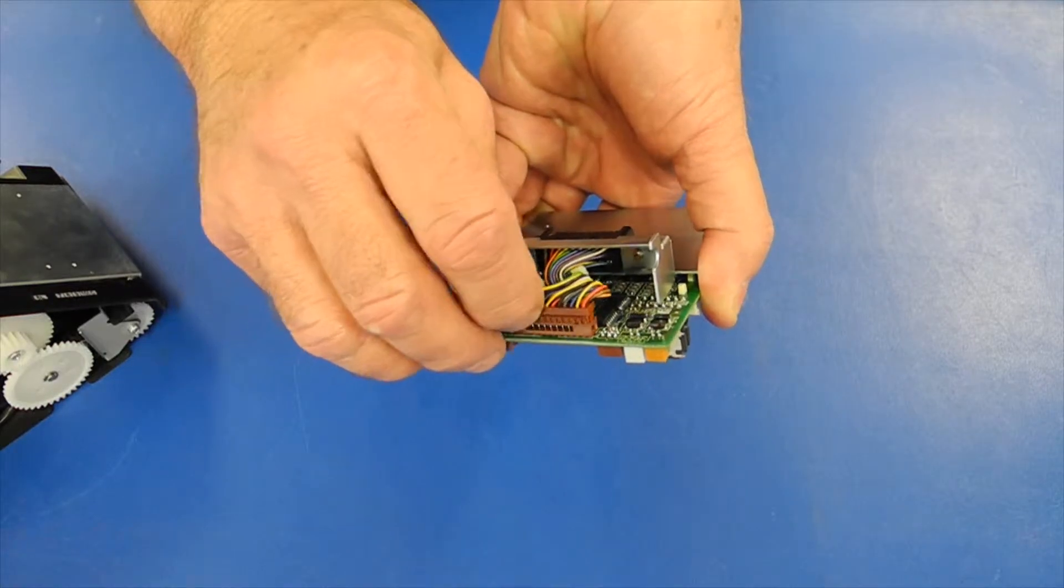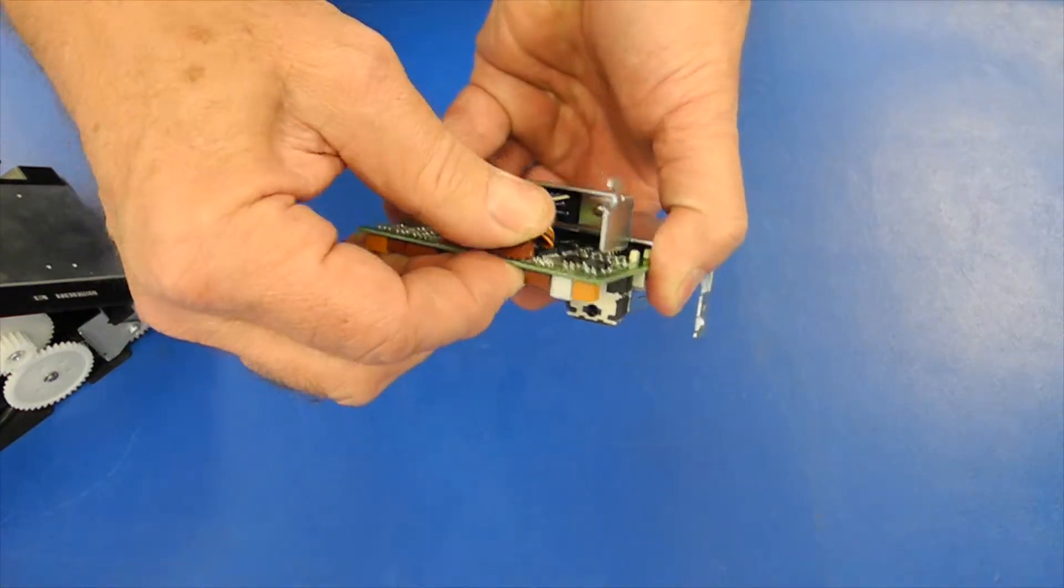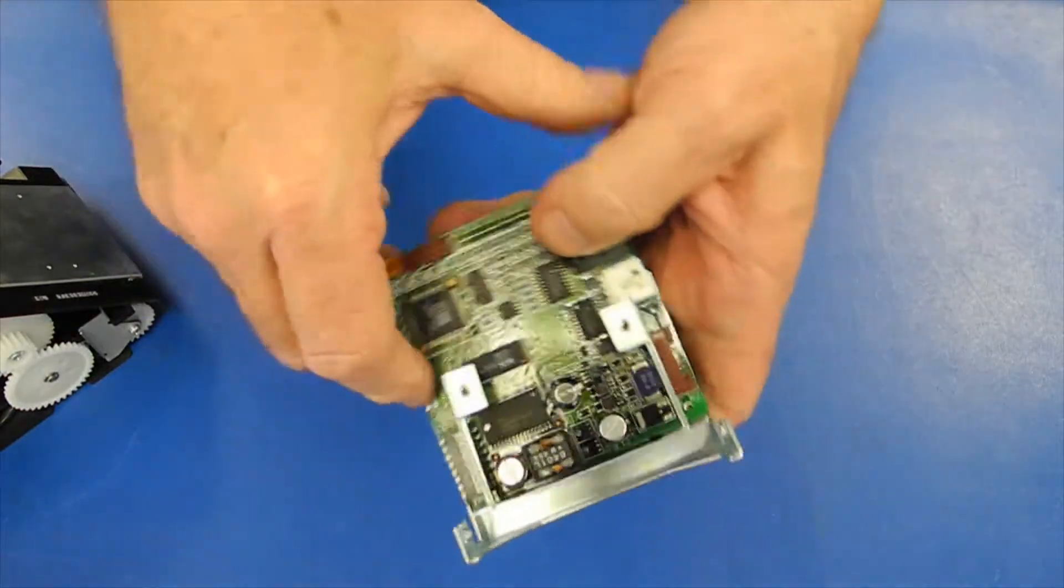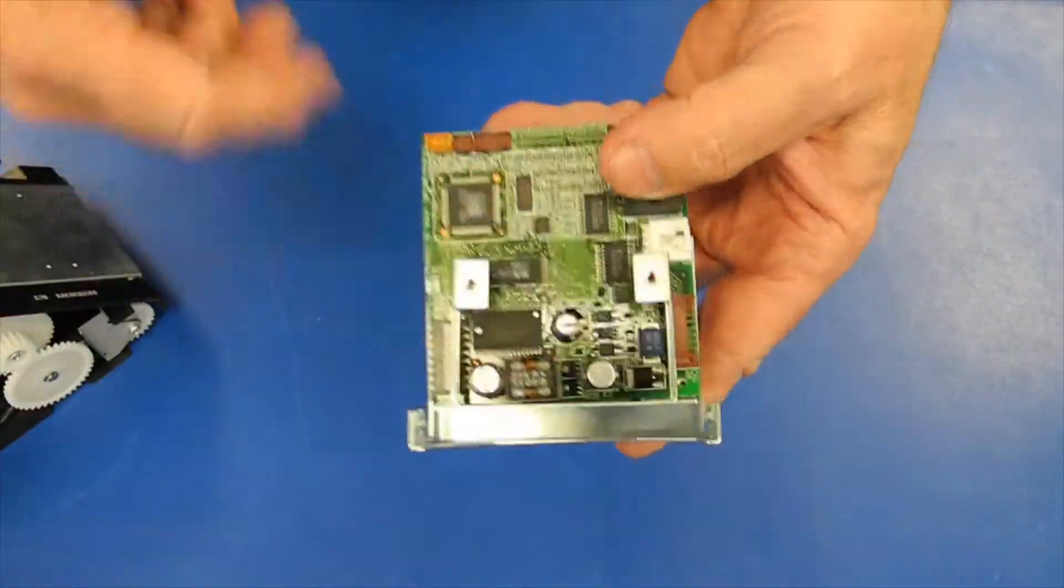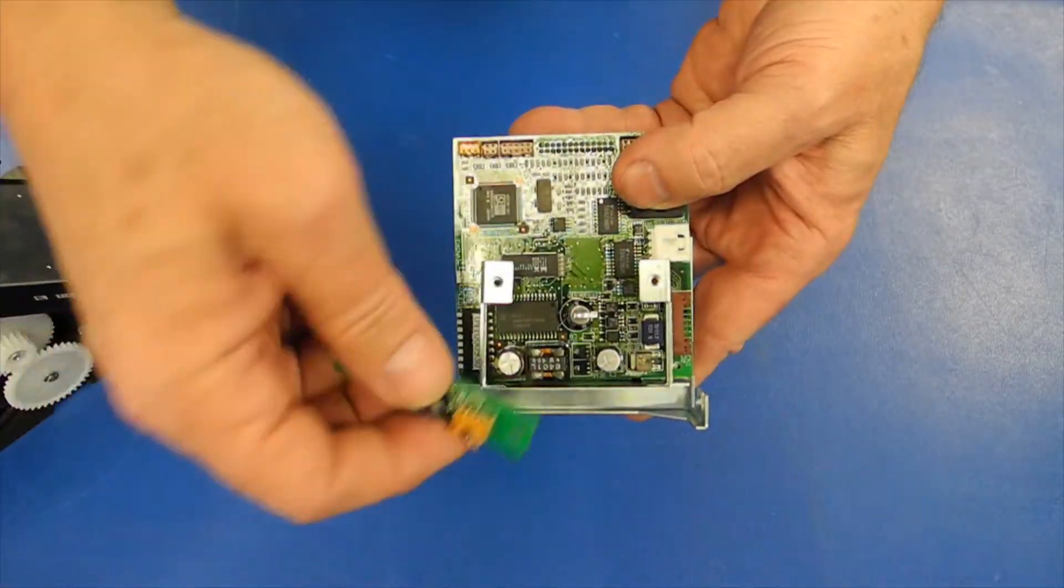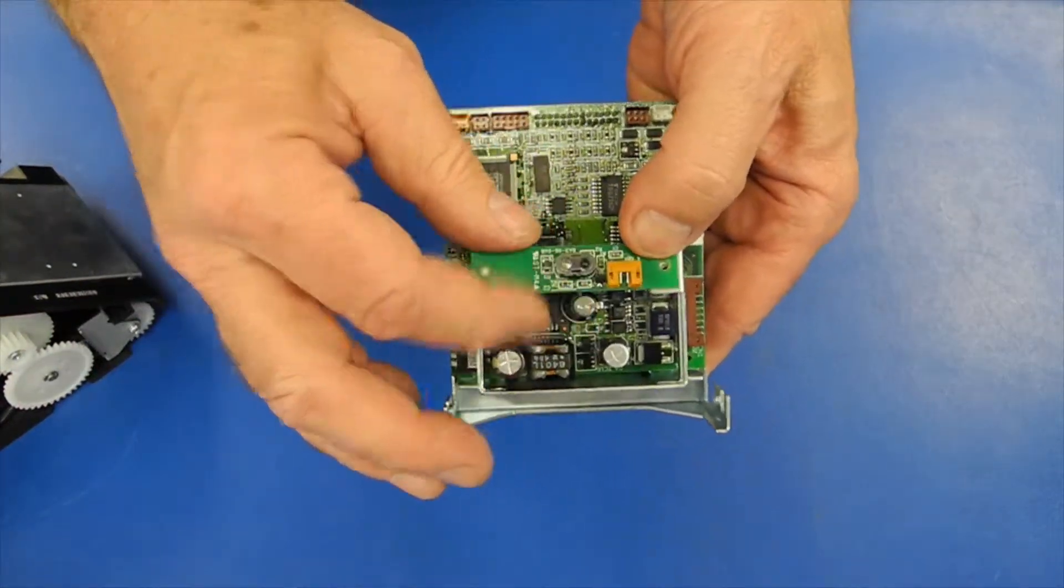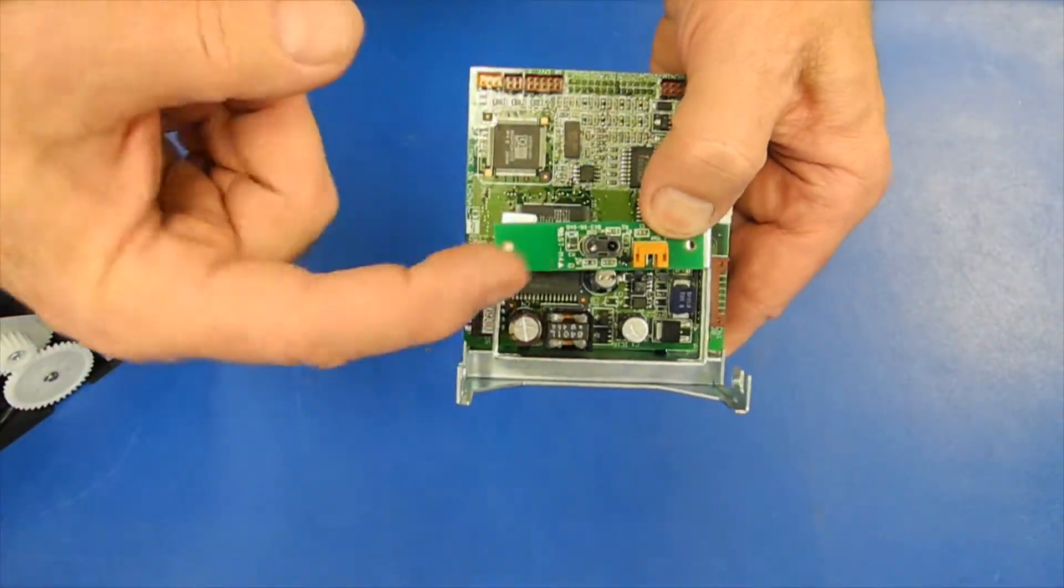Slide the module back into the transport, then use two screws to secure the ICB module to the bracket. Run a cable from the connector on the ICB module down to the brown connector on the processor board.